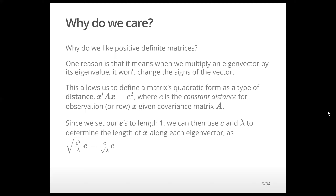A matrix is positive definite if its quadratic form is always greater than 0, and all of its eigenvalues are greater than 0 — which is implied by the quadratic form condition. This allows us to think of a matrix's quadratic form as a type of distance, where the quadratic form equals c², and c is the constant distance for observation x given covariance matrix A.